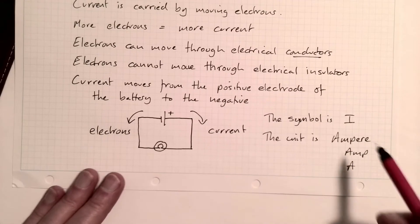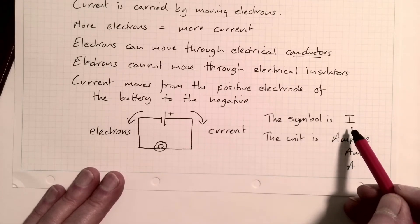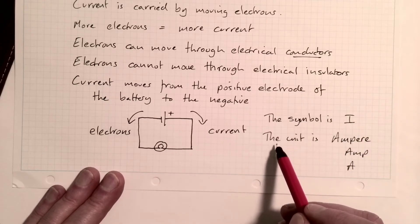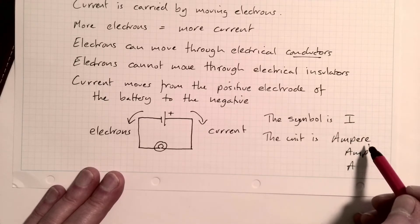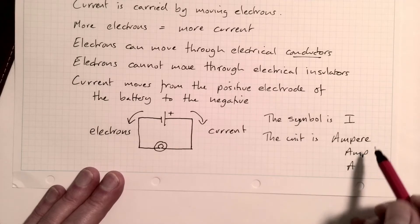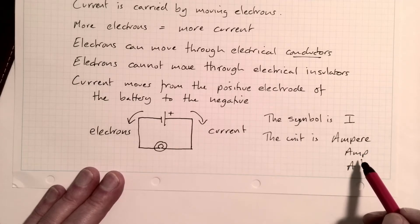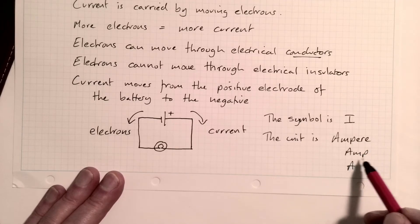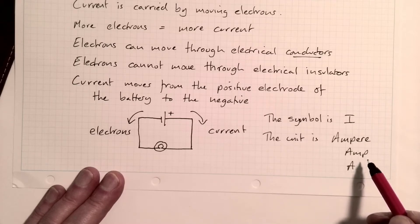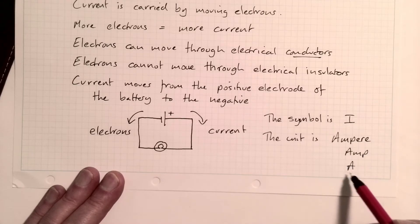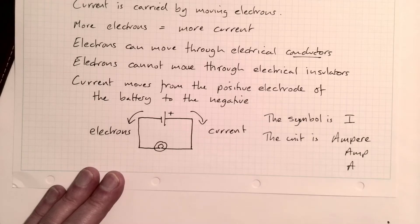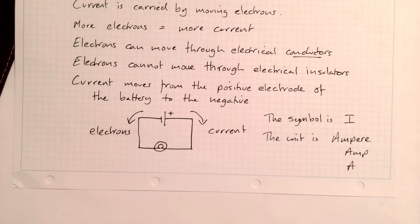The symbol for current is a capital I. The unit is the ampere, which is named after a person, shortened to amp very often. So we'll see five-ampere fuses, that sort of thing, and it has the symbol A for the unit.